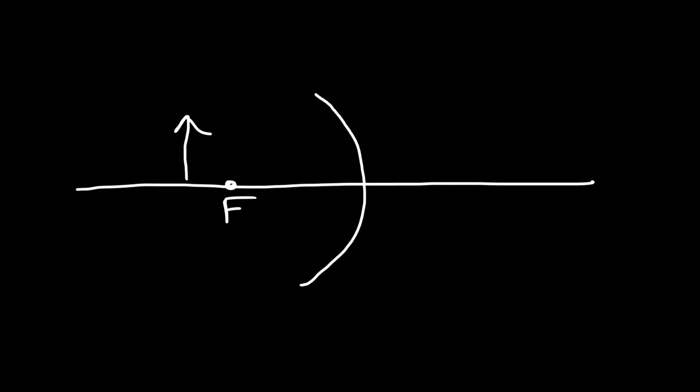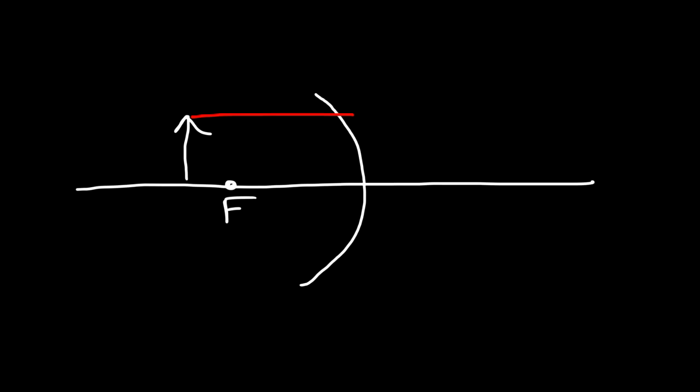Let's place the object outside of the focal point. The distance between the object and the mirror is DO, and HO is the height of the object. So let's draw a ray from the object to the mirror.